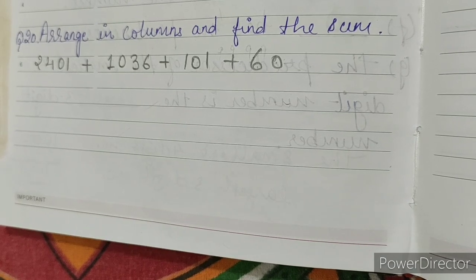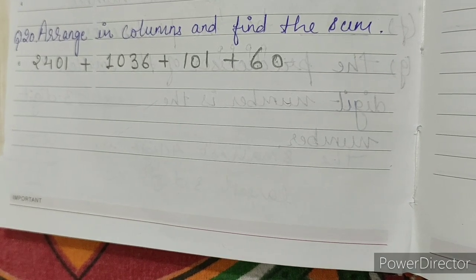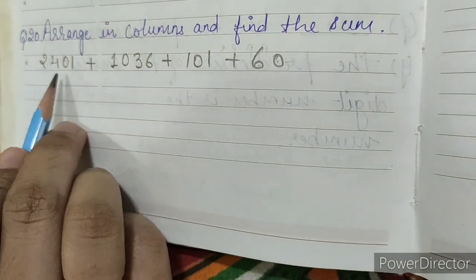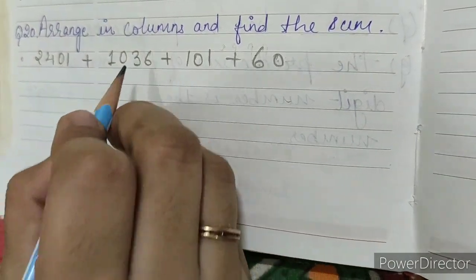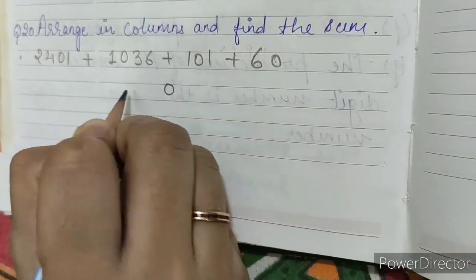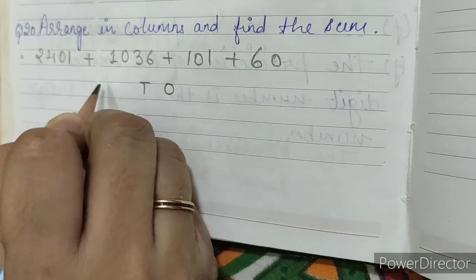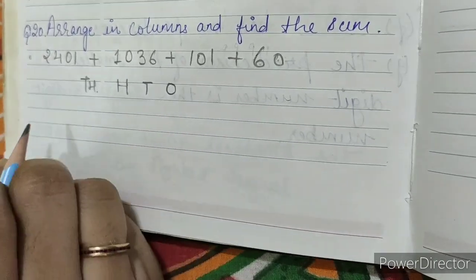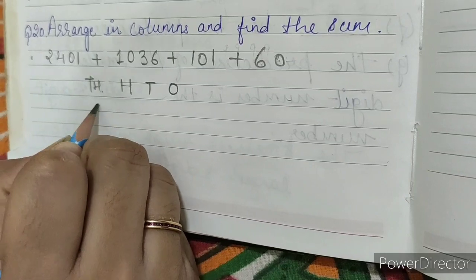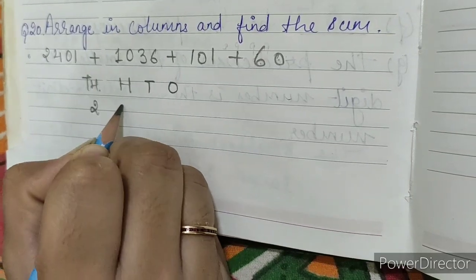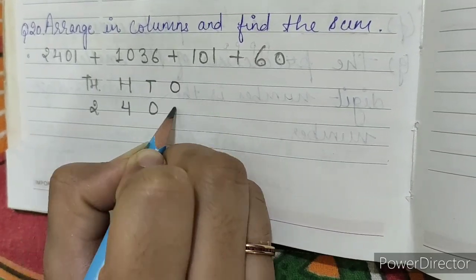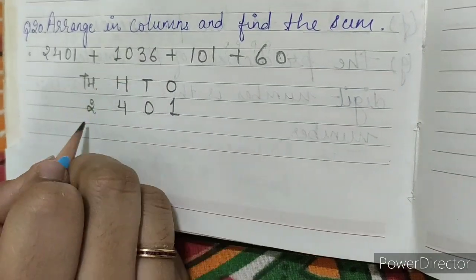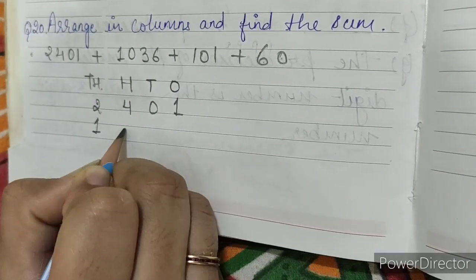Question Number 20: arrange in columns and find the sum. First of all we have to arrange these numbers in columns — ones, tens, hundreds, thousands. We have 2401, then 1036.